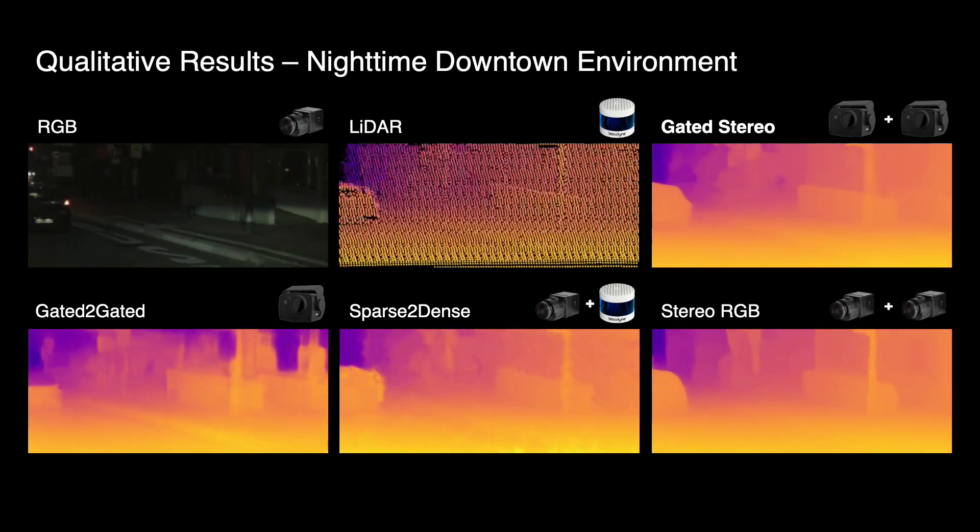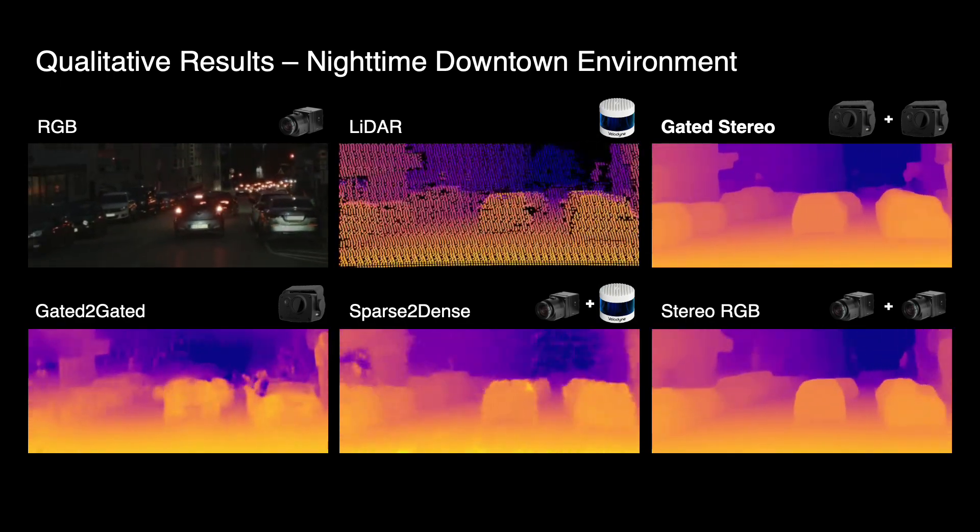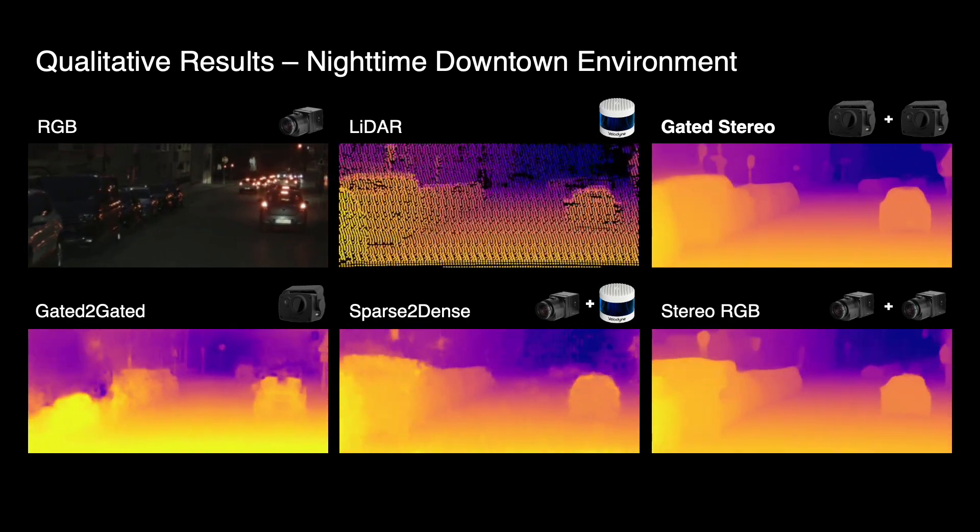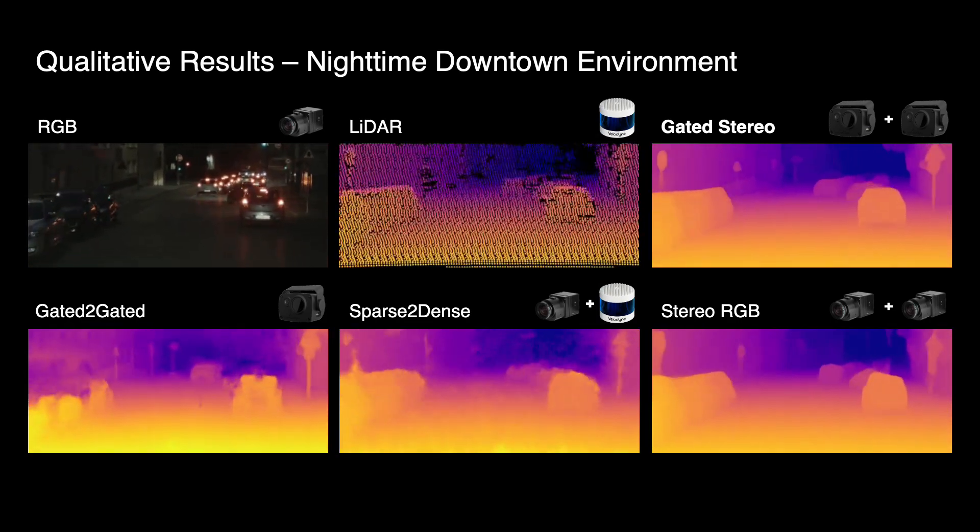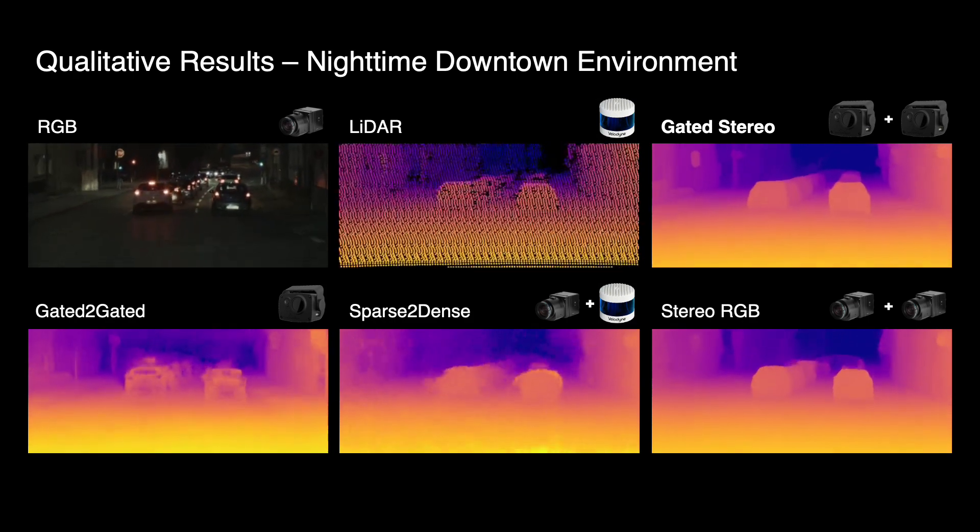In nighttime conditions, conventional RGB cameras suffer from the lack of ambient light. In contrast, the active illumination source of the gated system allows to exploit both time-of-flight and stereo cues to capture accurate depth information even for objects at far distances.